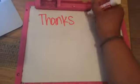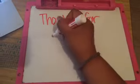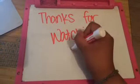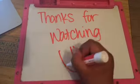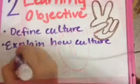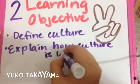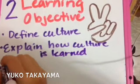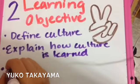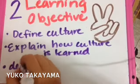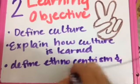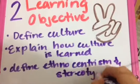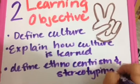That's it for Learning Objective 1. Now let's look at Learning Objective 2: Define culture, explain how culture is learned, and define ethnocentrism and stereotyping.